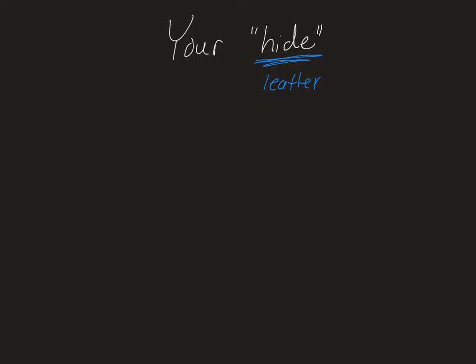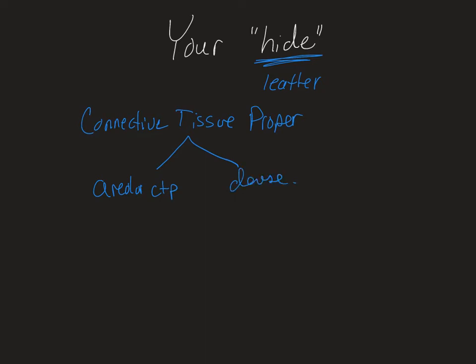What's really important about the dermis is the type of connective tissues it's made out of. Remember the epidermis is a stratified squamous epithelium. The dermis is connective tissue, and specifically, we're going to divide it into two major types: areolar connective tissue proper, and dense irregular connective tissue proper.